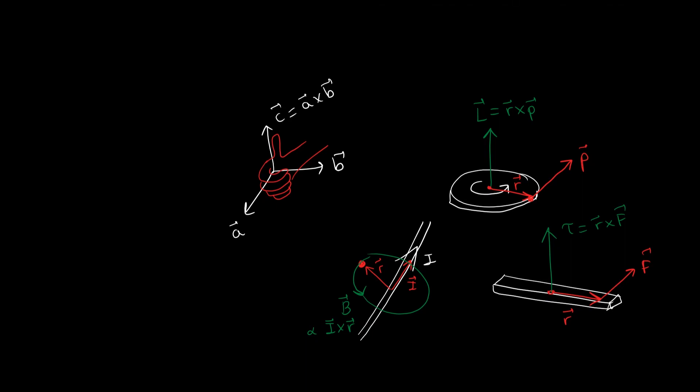The vectors whose sign depends on this convention are called pseudo vectors, where pseudo is Greek for lying or false.